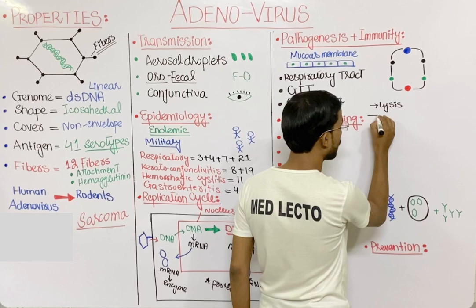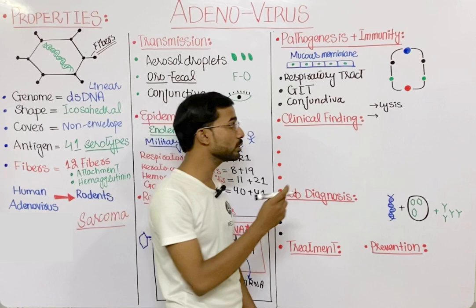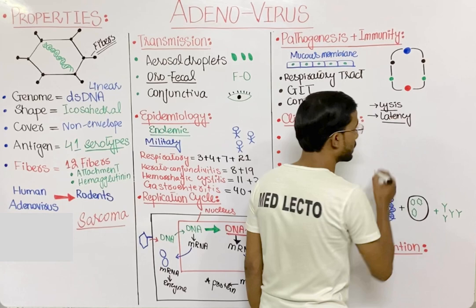Adenovirus has the ability to do two things: first, it can lyse the cell — when the cell lyses, the adenovirus is released. Second, it can establish latency, specifically latency in the tonsils.